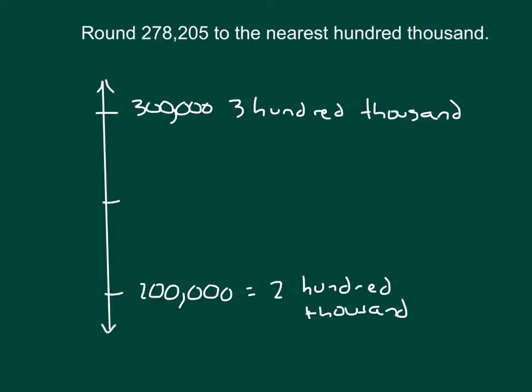The next step is to place the midpoint. So we have 200,000, 300,000. And then halfway in between, the next digit over in the 10,000's place is going to be a 5. So that midpoint is 250,000.